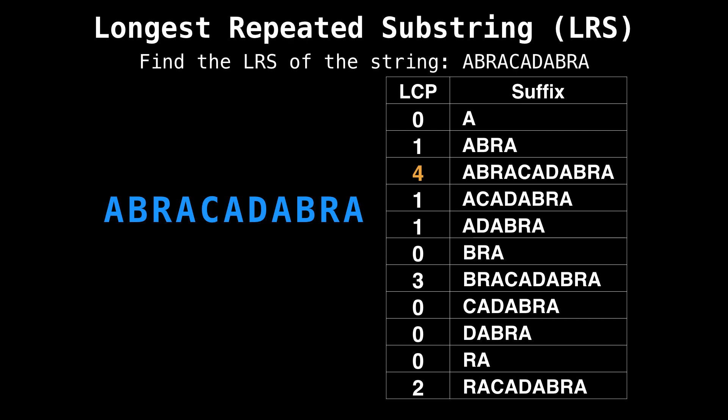So here again is "abracadabra". Since our LCP value was four, we know that the first four characters from the suffix "abracadabra" form one part of the repeated substring. Next, we know that the suffix above it, which shares the LCP value of four, also shares four characters present in that longest repeated substring.